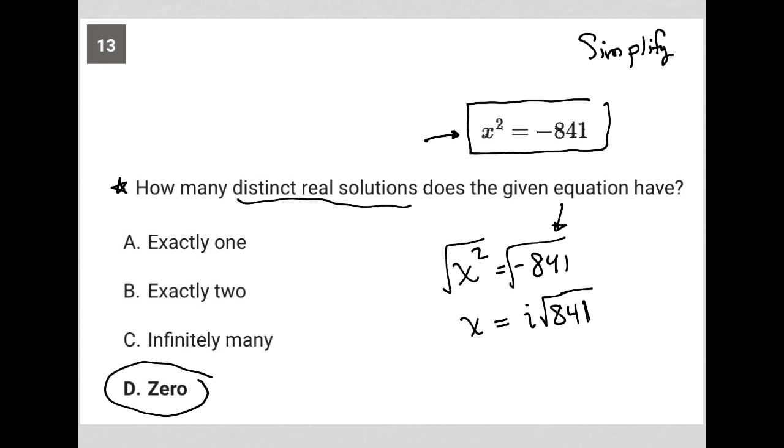Or you have learned about i, and even that would also take you to saying, hey, the answer is zero distinct real solutions, because all we have are imaginary solutions. So either way, our answer is choice D.